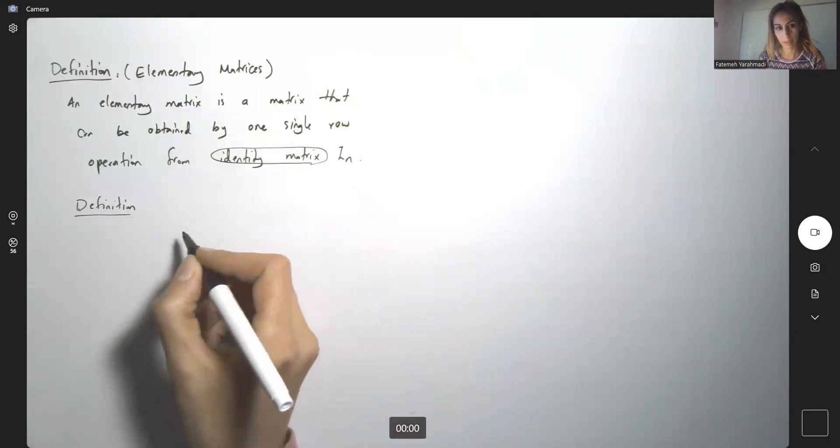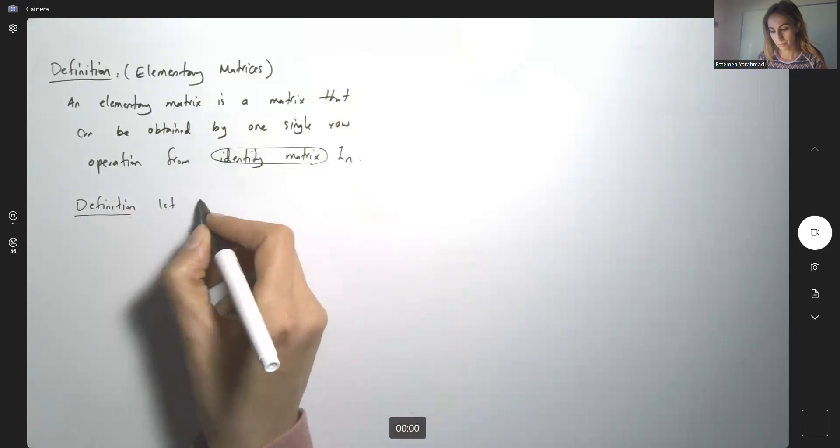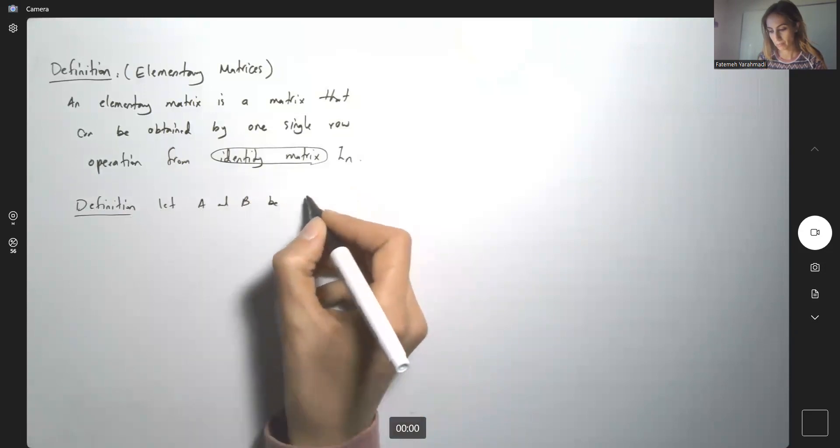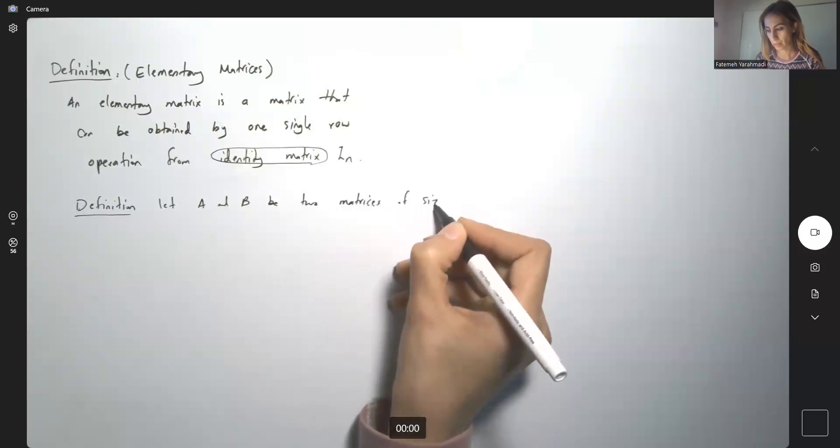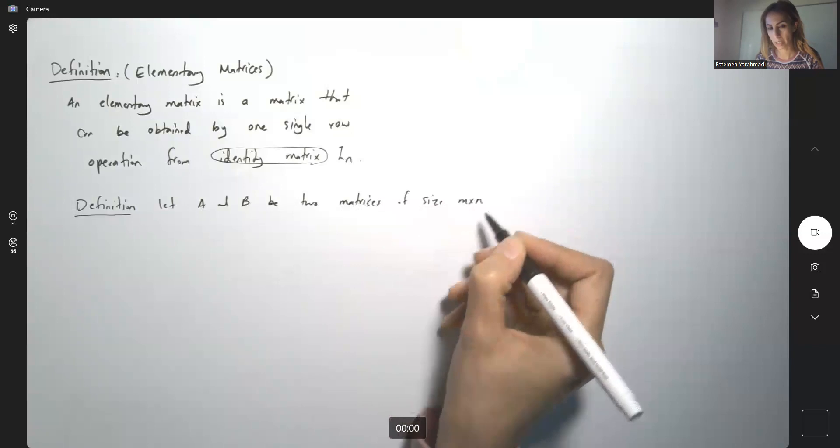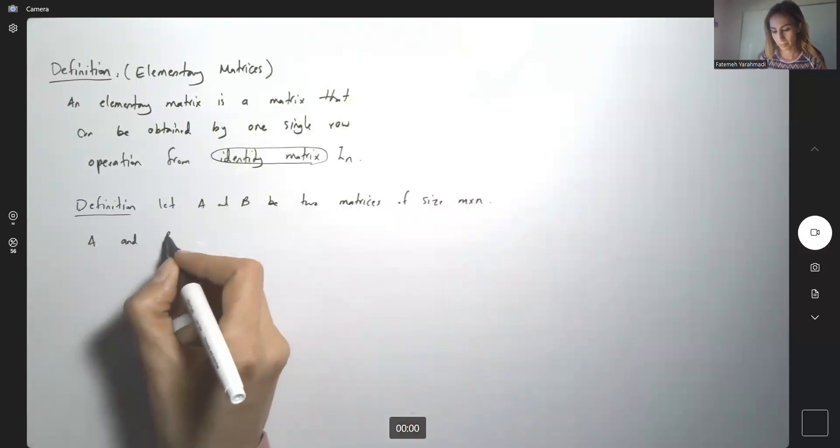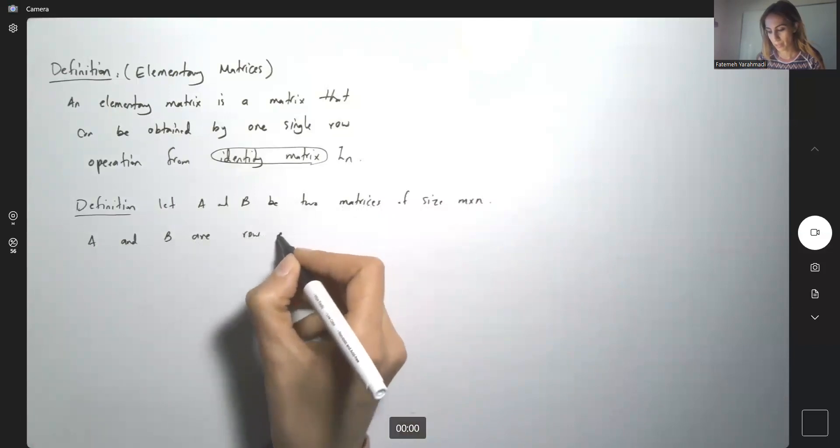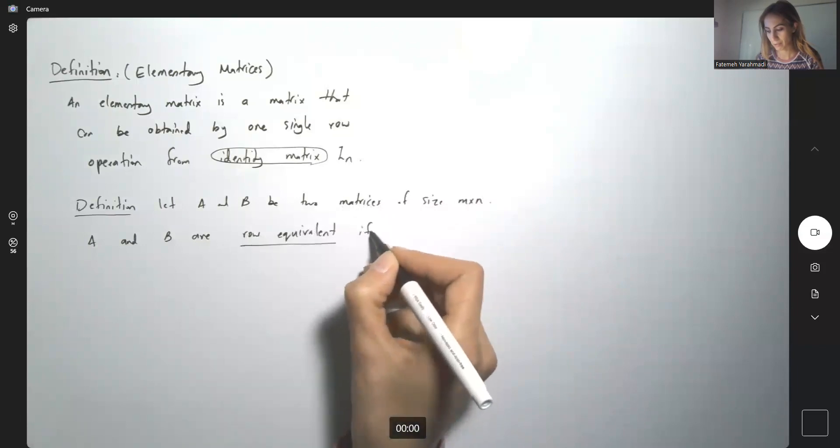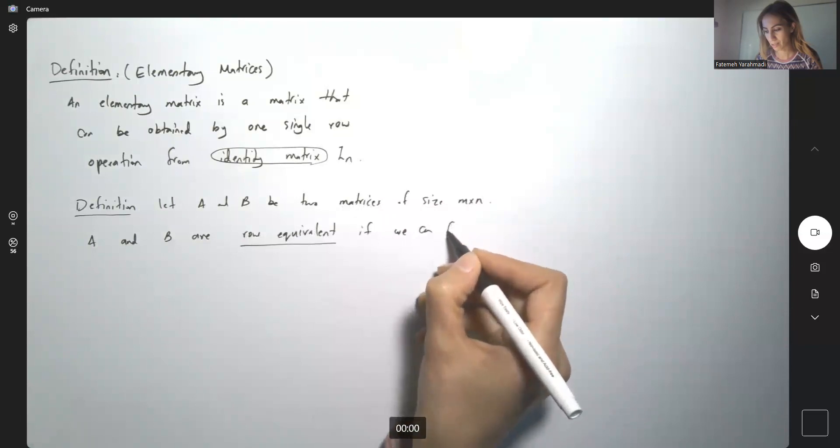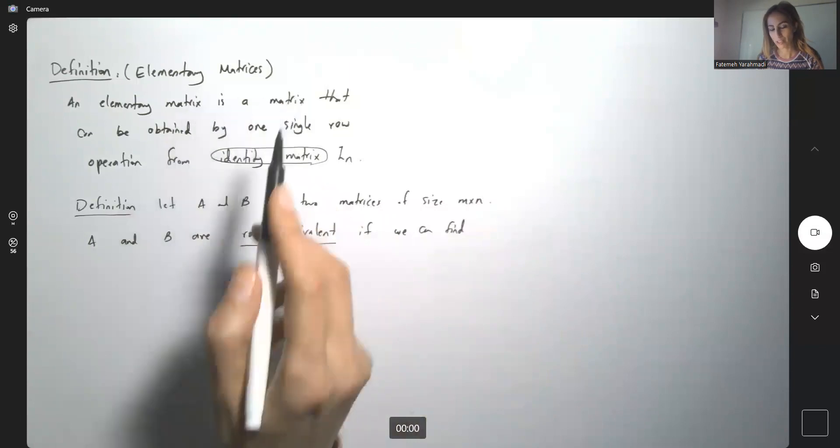Then we're going to move on to one theorem. Suppose you have two matrices of the same size, let A and B be two matrices of size m by n. We say that A and B are row equivalent if you can find finite numbers of elementary matrices.